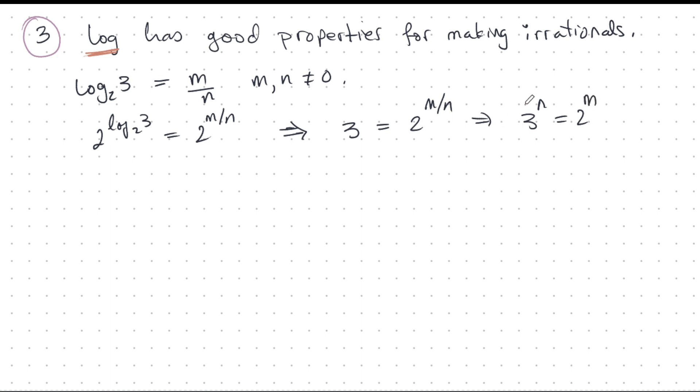Because the only way it can be true is if m and n are 0, but we said they're not 0. I mean, you want a fraction, not an undefined number. So this is impossible. You can't have products of a prime equal to product of power of a completely different prime like that. That's impossible. And so log base 2 of 3 is not in Q.